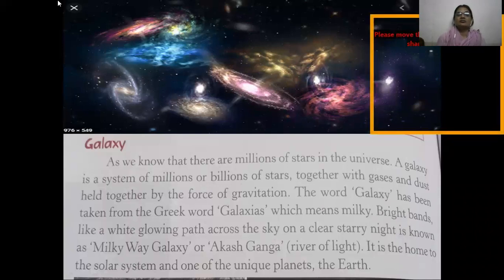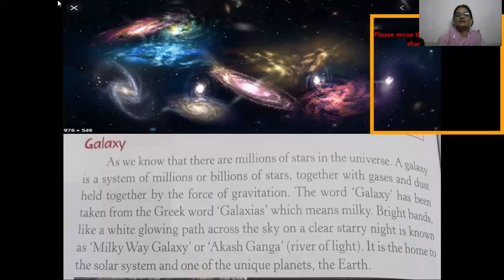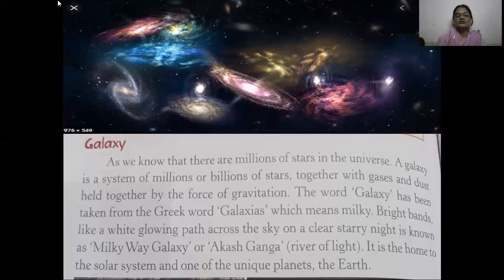As we all know, there are millions of stars in the universe. A galaxy is a system of millions or billions of stars together with gases and dust, held together by the force of gravitation. The word galaxy has been taken from the Greek word Galaxias, which means milky. Bright bands like a white glowing path across the sky on a clear starry night is known as the Milky Way Galaxy, or Akash Dhamma, which means river of light. It is the home to the solar system and one of the unique planets, the Earth.